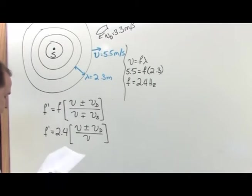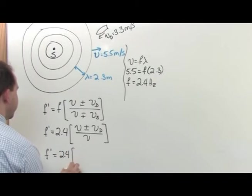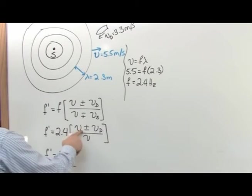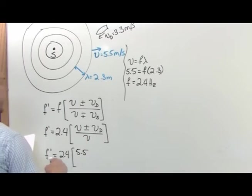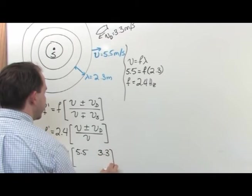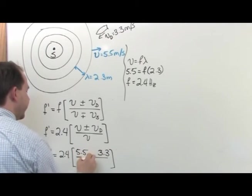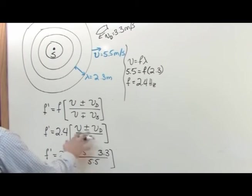Let's plug in our numbers and see what the answer is. The shifted frequency is 2.4 times the speed v, which is 5.5. I'm not going to do minus or plus yet. Velocity of the detector is 3.3 meters per second and on the bottom it's just the speed of the wave, which is again 5.5.